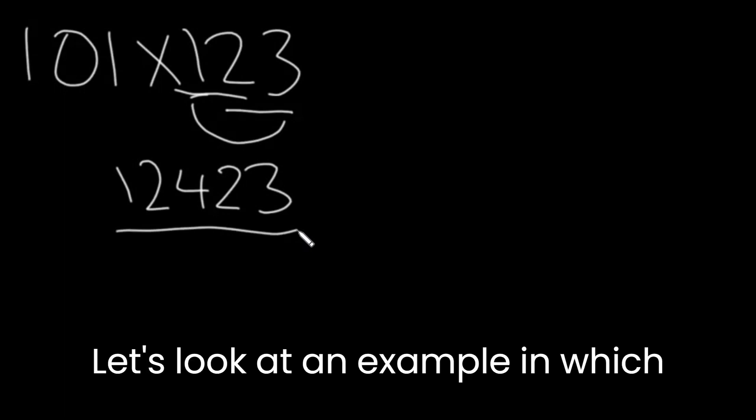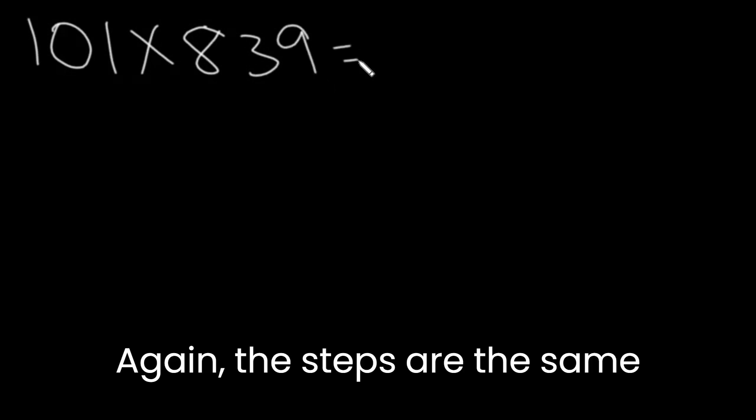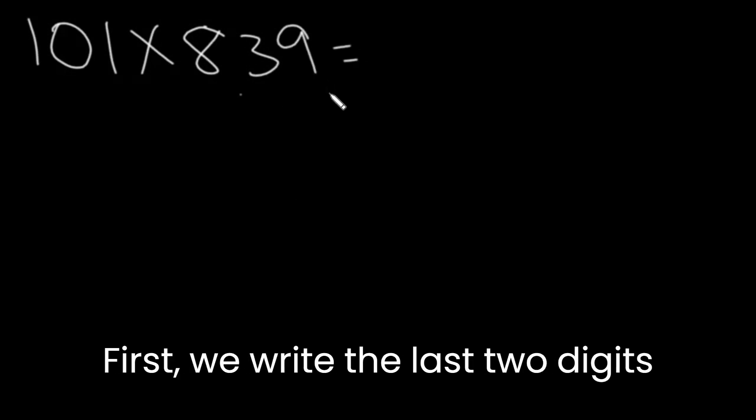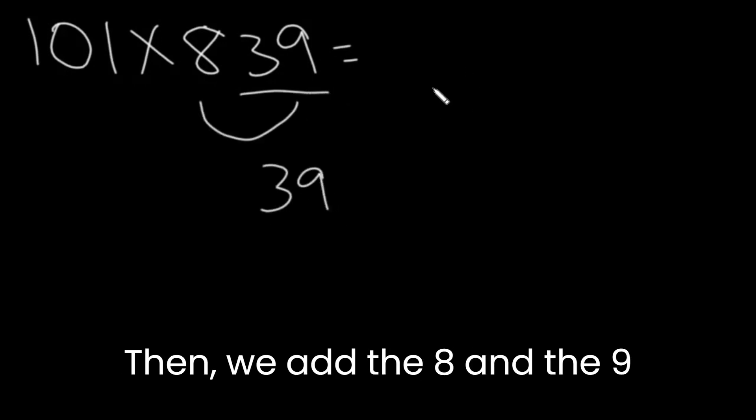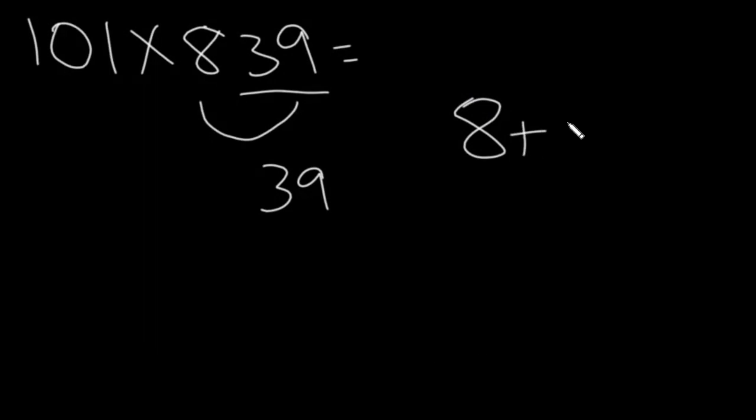Let's look at an example in which we have to carry. Let's say we have 101 times 839. Again, the steps are the same. First, we write the last two digits, so that's 39. Then we add the 8 and the 9, which will give us 17.